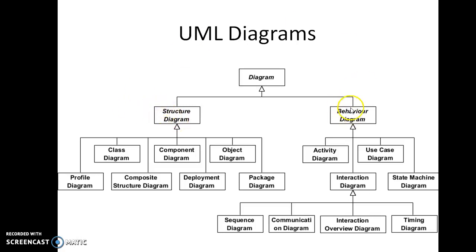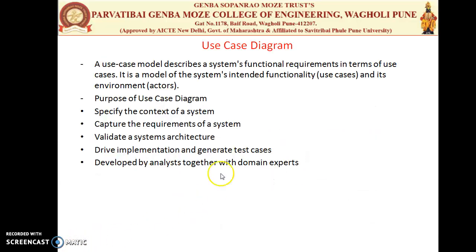This work is done by the Behavioral Diagram. The Behavioral Diagram shows the dynamic behavior of the objects in a system, which can be described as a series of changing states over time. We will start with the Behavioral Diagram, beginning with the Use Case and Activity.